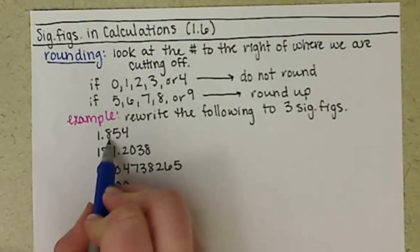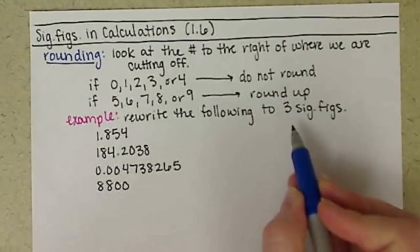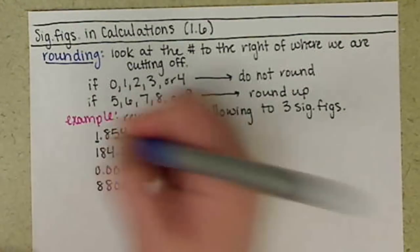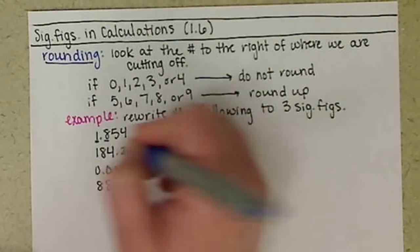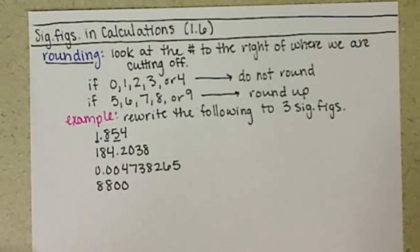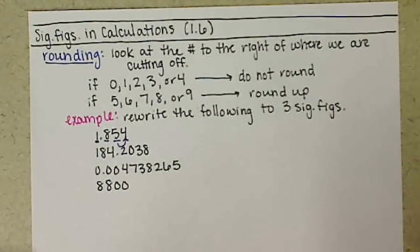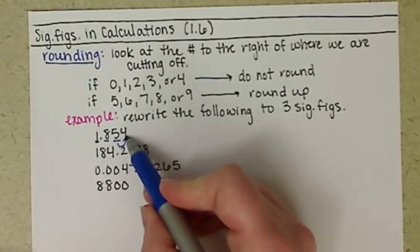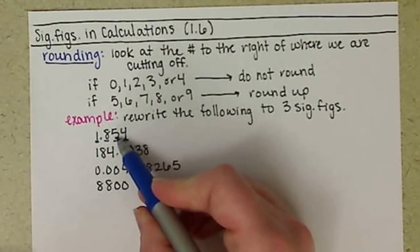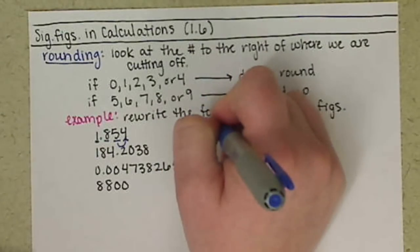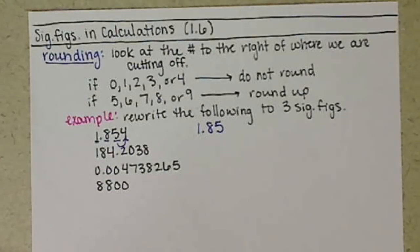Alright, so our first number we have 1.854. We want to round to 3 sig figs, so we start counting. We have 1, 2, 3 sig figs, so we're going to look to the right of our 5 to see if we need to round it up. It's a 4, so we don't want to round the 5 up, so that number to 3 sig figs would be 1.85.